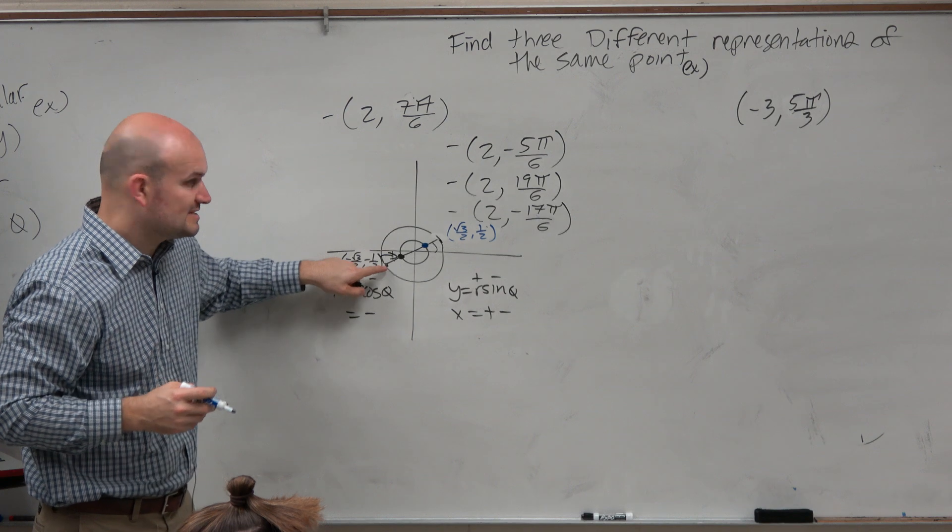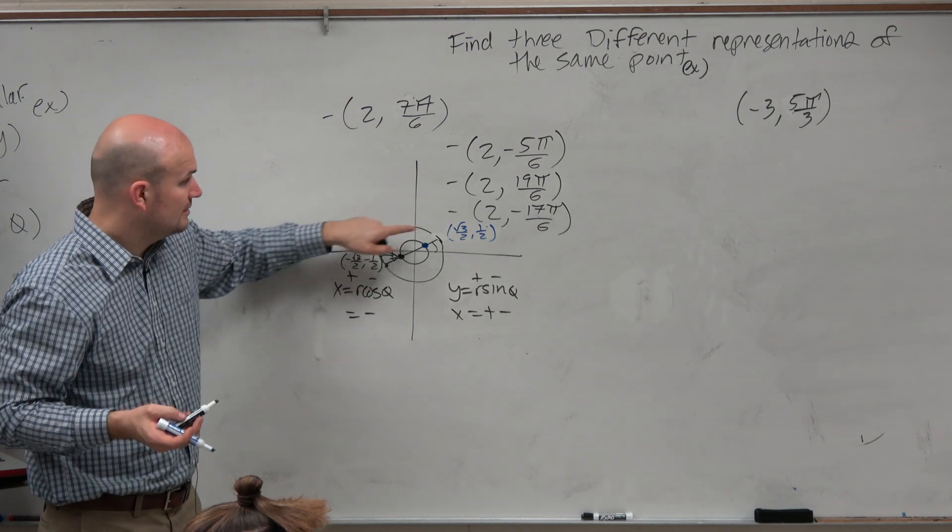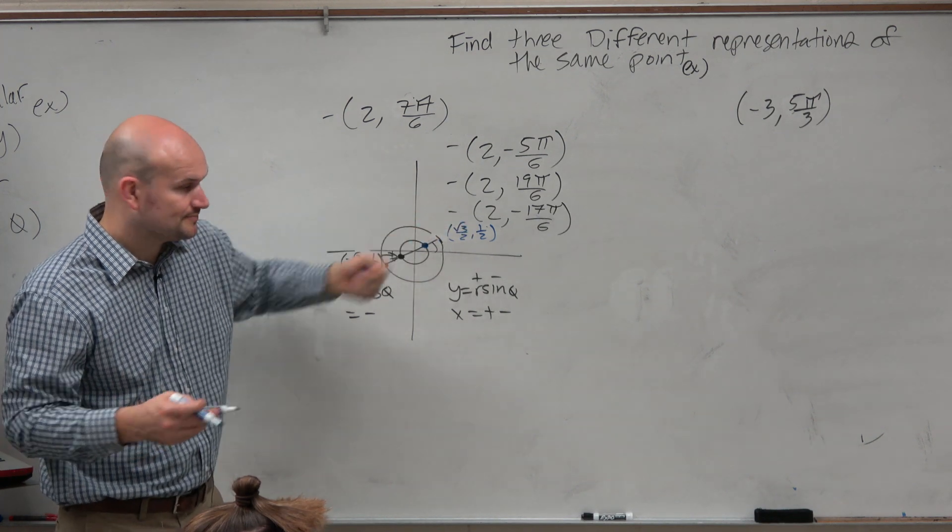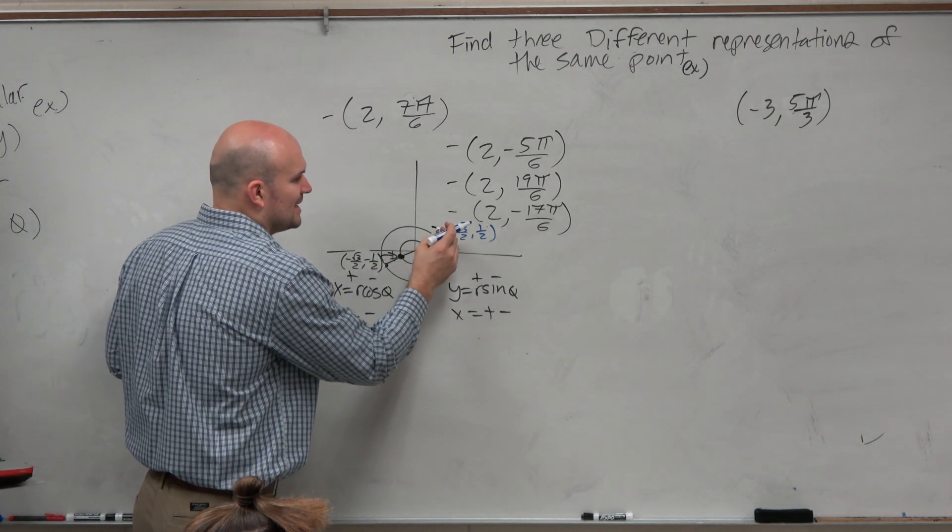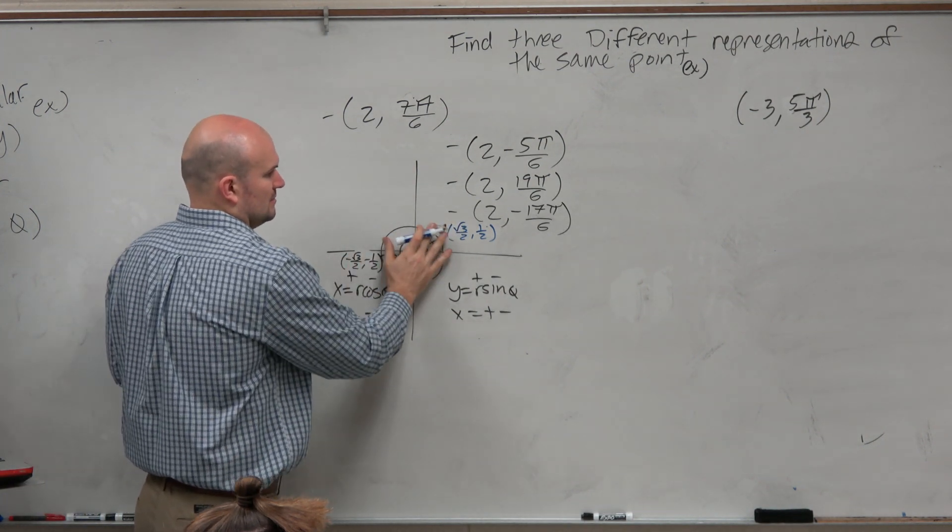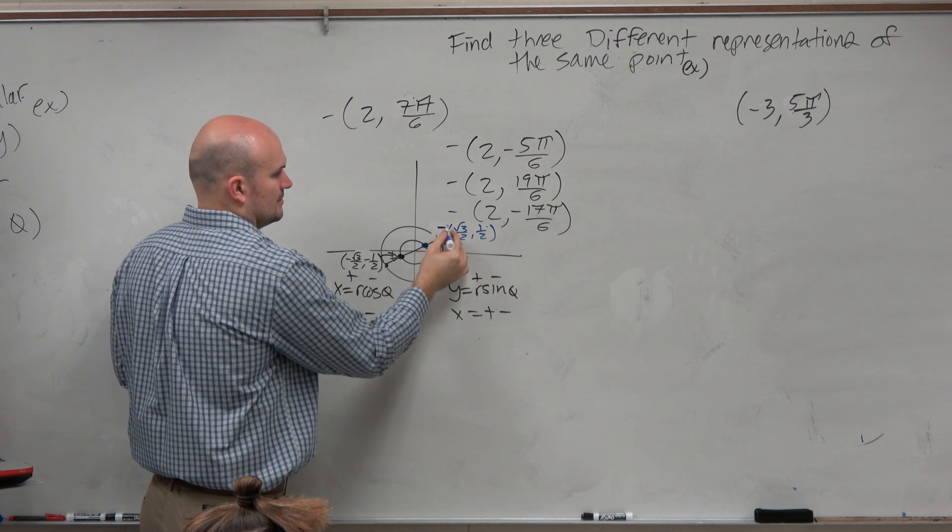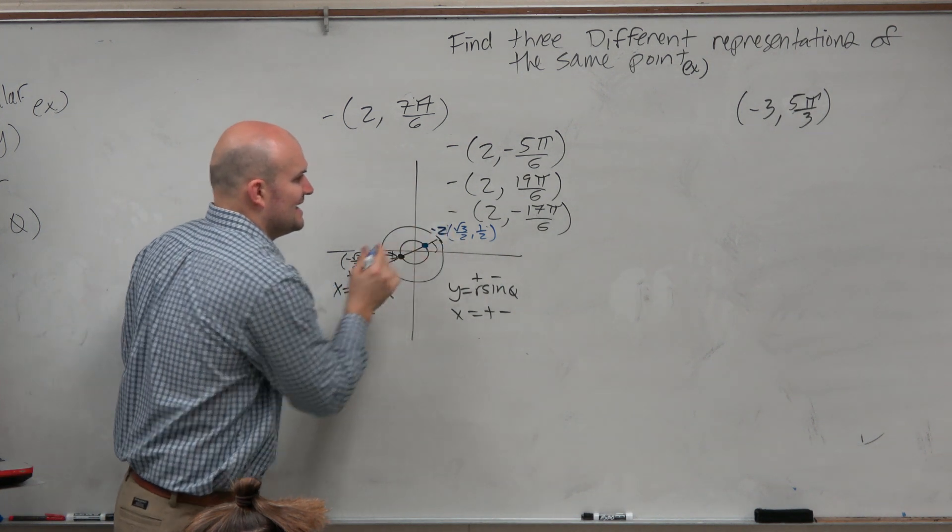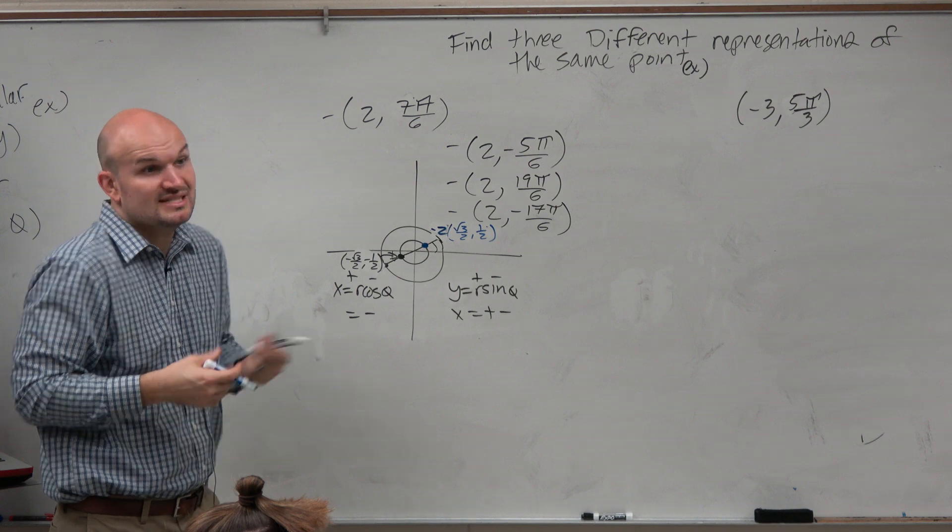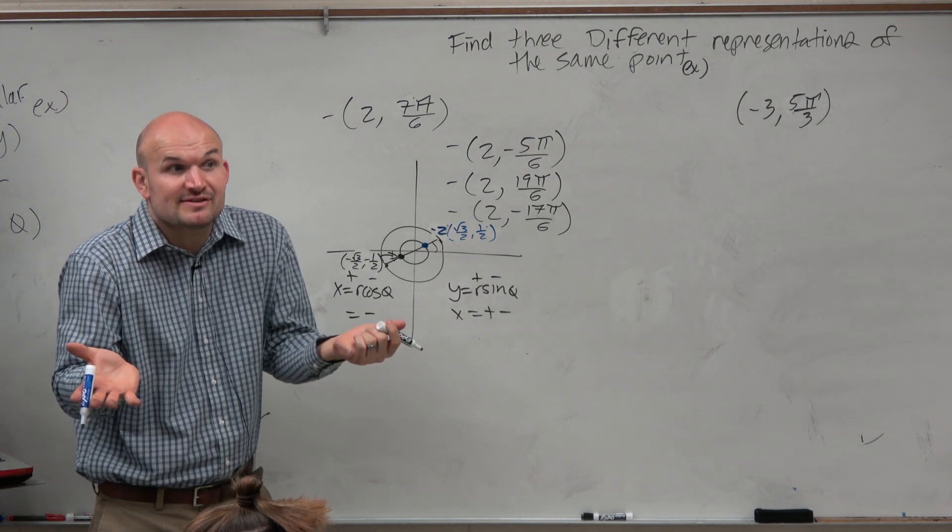Now, again, if it's for the second point, then you just multiply by 2, right? For this point, you just multiply by 2. What if I multiply this by a negative 2? What if I multiply this by a negative 2 instead of a positive 2? It's a scalar, right? You can multiply by a positive or a negative.